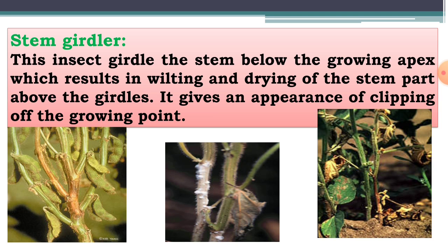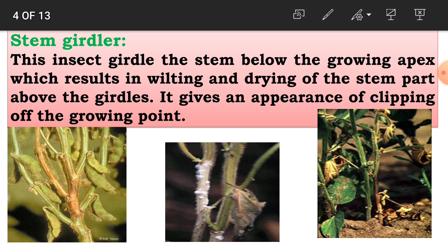The next pest is the stem girdler. This insect girdles the stem below the growing apex, resulting in wilting and drying of the stem above the girdled region. The portions above the girdler are dried or wilted. It gives an appearance of clipping of the growing point. This is the nature of damage of the stem girdler pest.